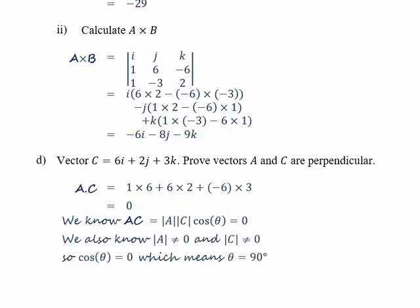If cos theta equals zero, then theta equals pi over 2, or 90 degrees, which means that A and C must be perpendicular. And that's the end of question 1.